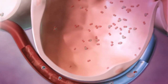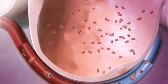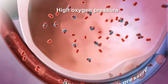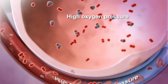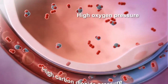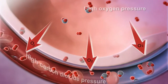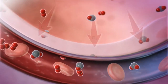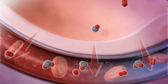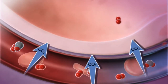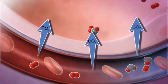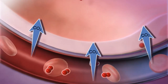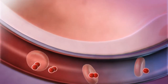Oxygen from inhaled air diffuses from the alveoli into the pulmonary capillaries surrounding them and is pumped through the bloodstream. Carbon dioxide from oxygen-depleted blood diffuses from the capillaries into the alveoli and is expelled through exhalation.